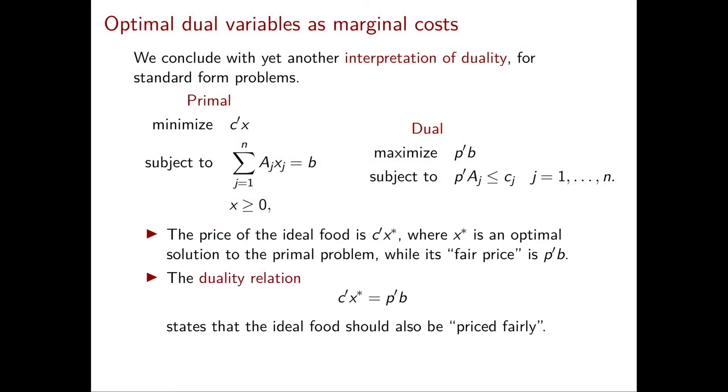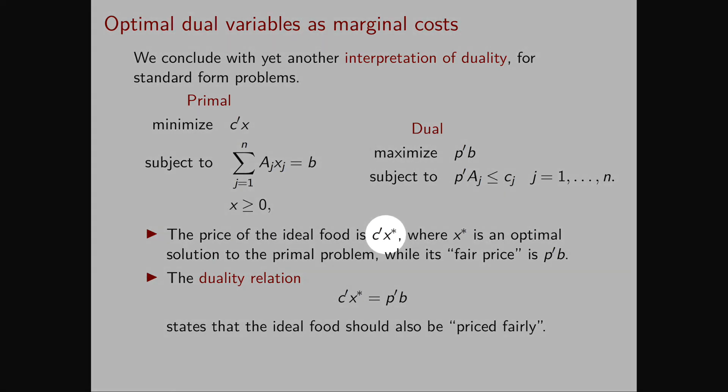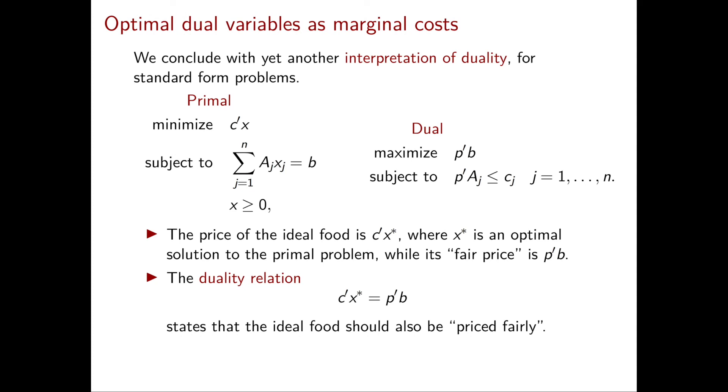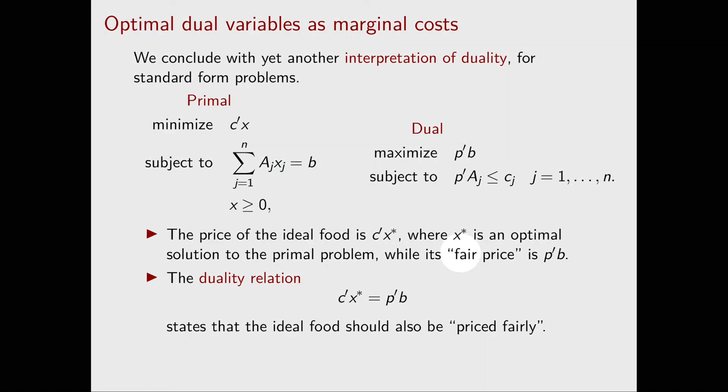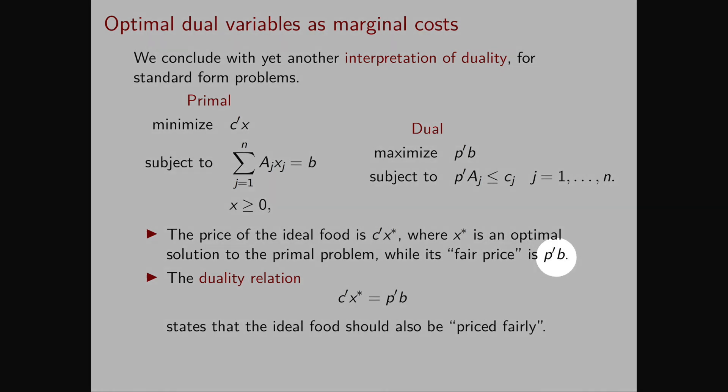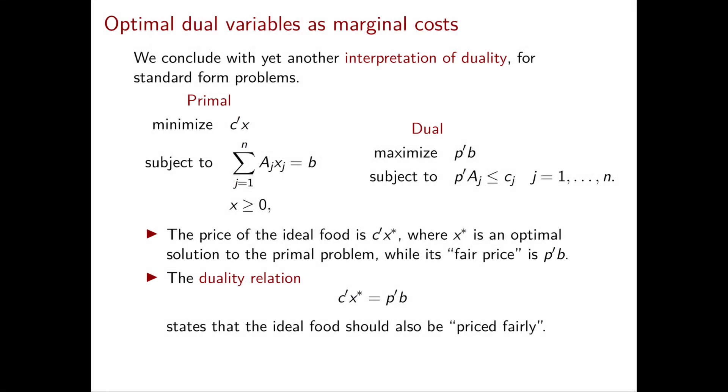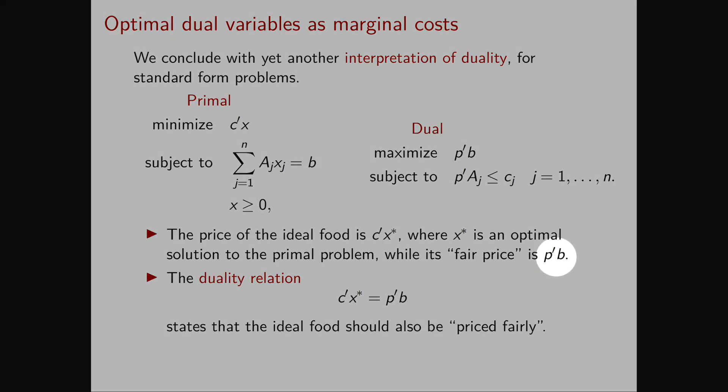Finally, we can look at the price of the ideal food. This is simply C transposed X star, where X star is an optimal solution to the primal. Also in this case, we can calculate its fair price, which is simply the sum of the fair prices of the nutrients that it contains. So it is P transpose B.